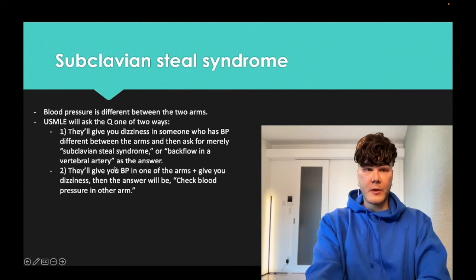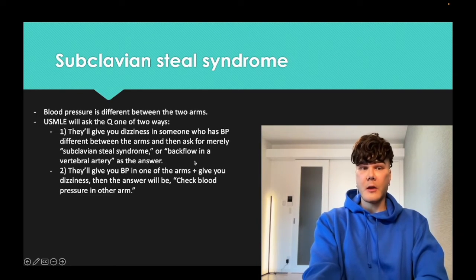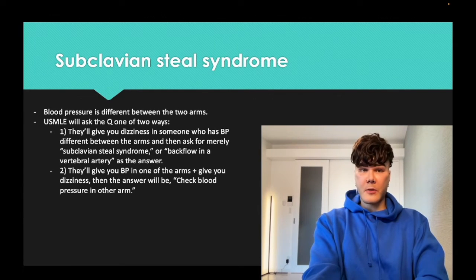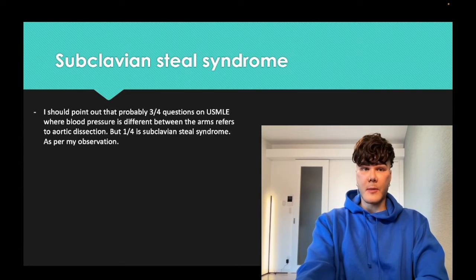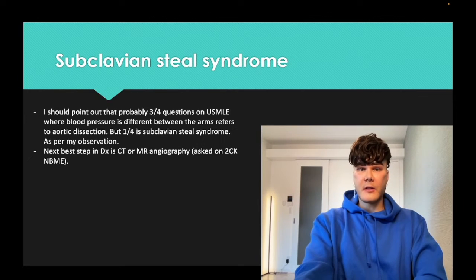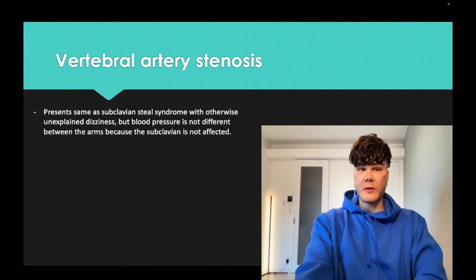The answer could be backflow in a vertebral artery. Or they'll tell you the patient has dizziness and blood pressure in the left arm is X — what's the next best step? Check blood pressure in the other arm. Blood pressure difference between arms is usually aortic dissection about three out of four times, but one out of four times it can be subclavian steal. CT or MR angiography is the next best step for diagnosis, and that's asked on the 2CK NBME.